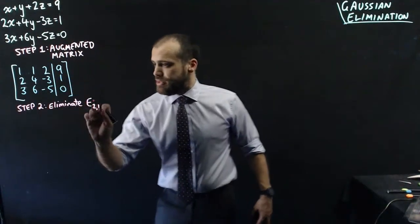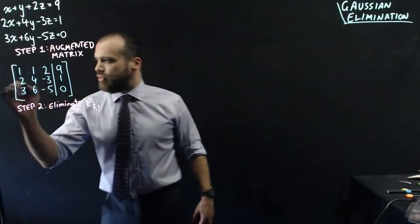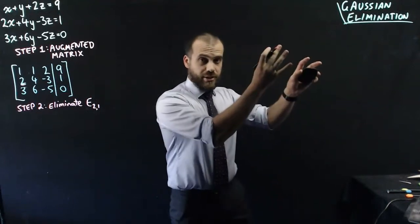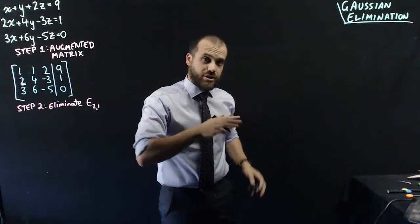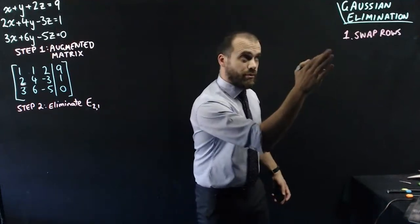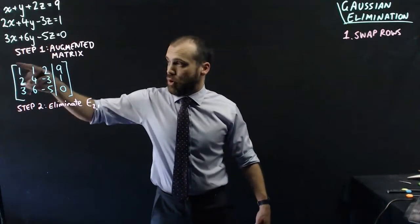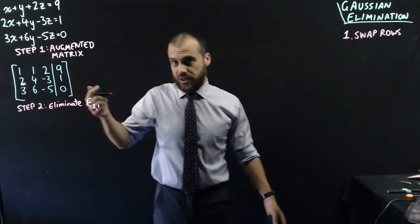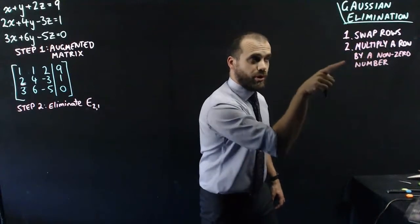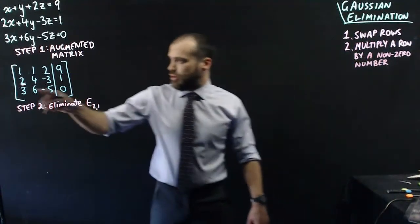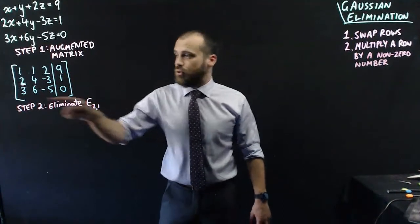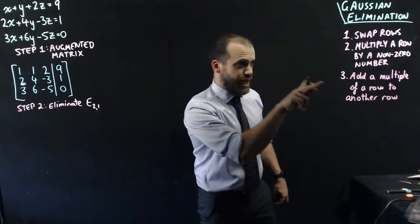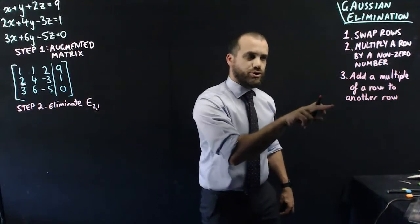Now step two is going to be to eliminate element E21. This element here is the one I want to get rid of. I get rid of it using Gaussian elimination and the three operations that are allowed. Number one, I'm allowed to swap rows. Number two is multiplying a row by a non-zero number - I can multiply a row by two, three, or four, multiplying the entire row by that number. Finally, number three is add a multiple of a row to another row.